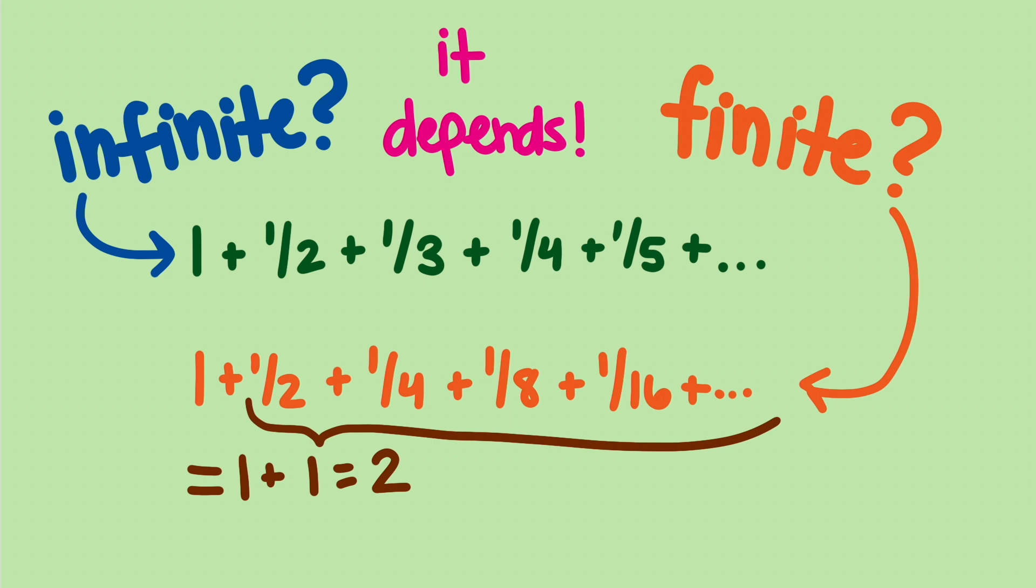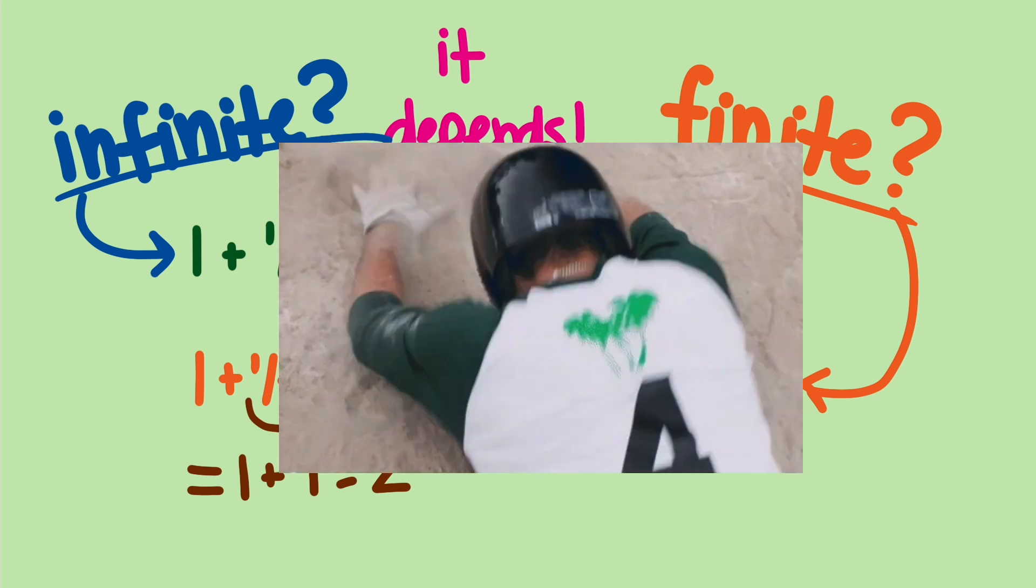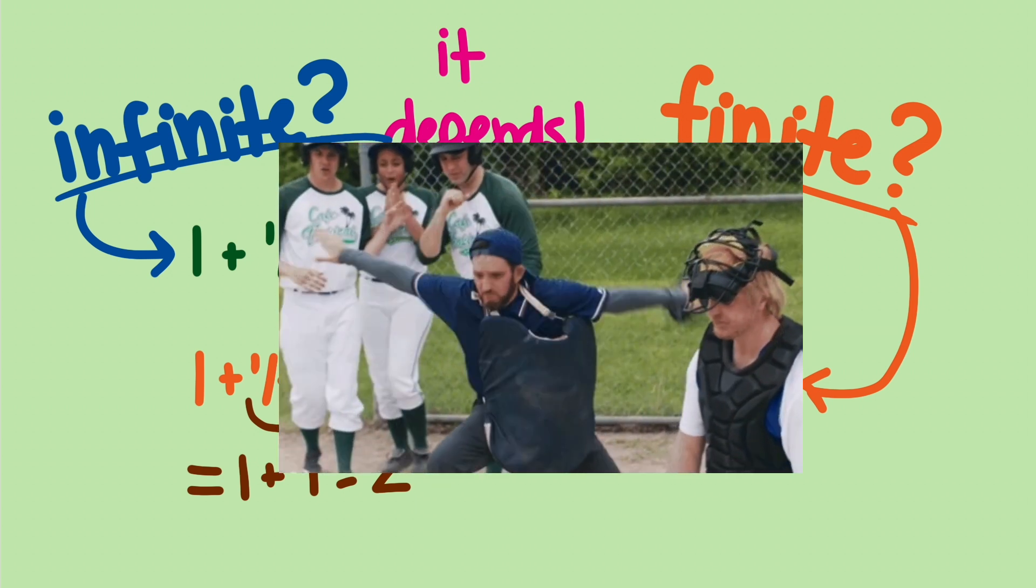So is the blood concentration more like the infinite series that goes to infinity, or the one that levels out to a finite value? And if it levels out, will it level out at a safe level?